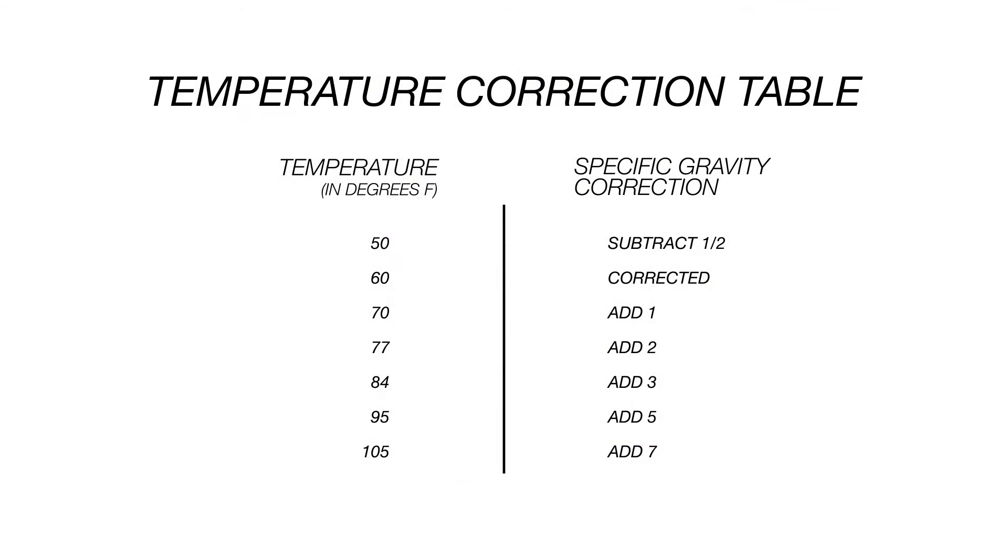However, if the temperature of the liquid is not at the calibration temperature, which is typically 60 degrees Fahrenheit, you will have to add or subtract gravity points to get an accurate reading. This chart will give you a place to start. In addition, there are a number of online calculators that correct gravity readings based on temperature.